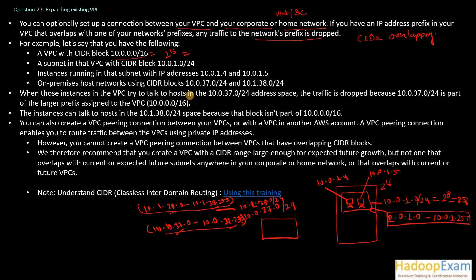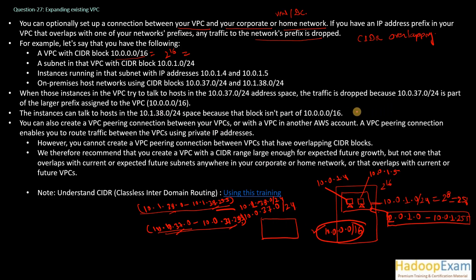When those instances in the VPC try to talk to hosts in the 10.0.37.0/24 network, the traffic is dropped. This is because 10.0.37.0/24 is part of the larger prefix assigned to the VPC — the VPC has 10.0.0.0/16, and 10.0.37.0/24 falls under that range. So any communication between them would be dropped due to the overlapping IP addresses.